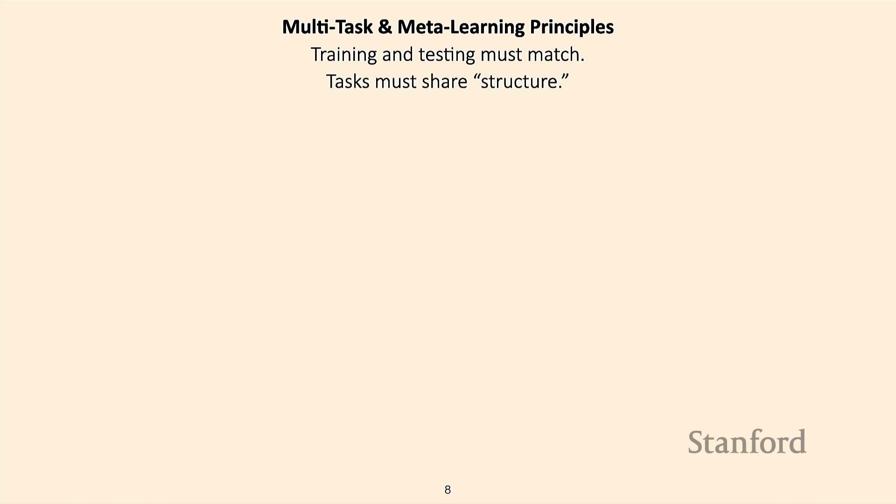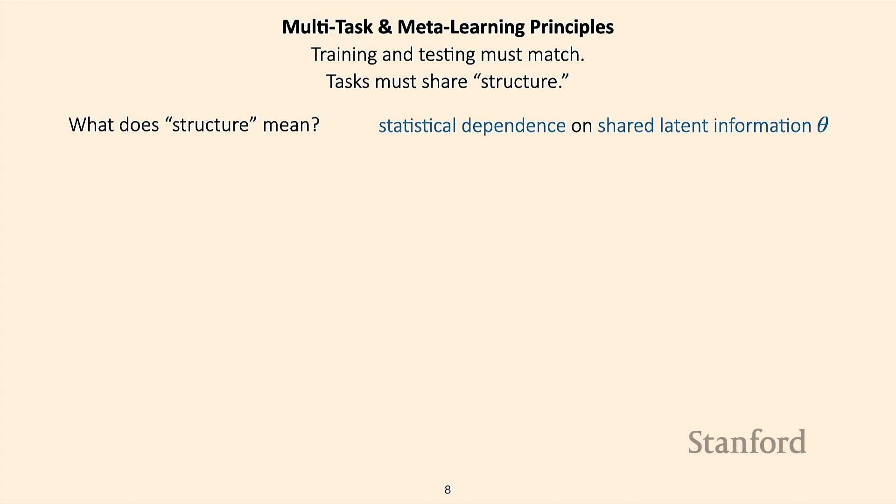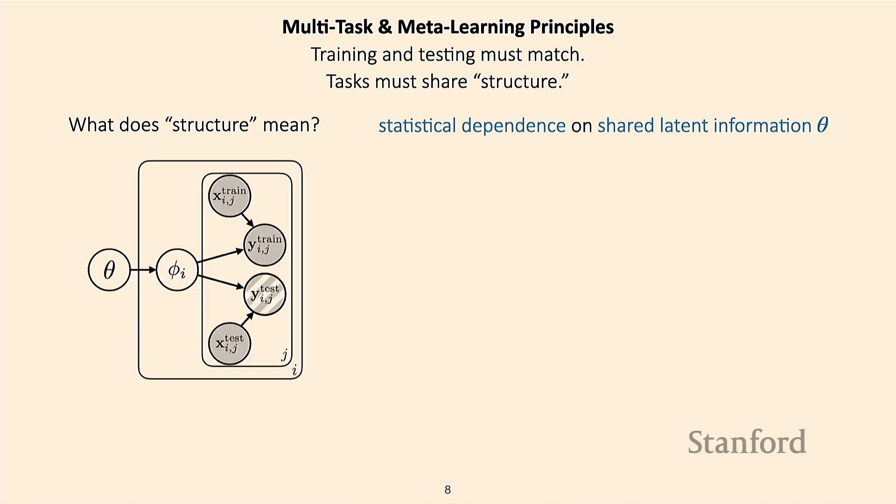This will also be a bit of recap. Even before we started talking about meta-learning algorithms, we talked about how training and testing tasks should share some degree of structure. We talked about how this can be thought of as a statistical dependence on some latent information theta. We brought up this graphical model where we have task-specific parameters phi_i, some shared latent information theta, and the data we can observe — a support set denoted X_train and Y_train, and a query set denoted X_test and Y_test.